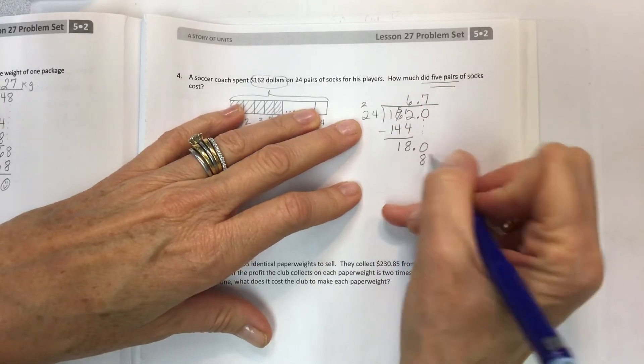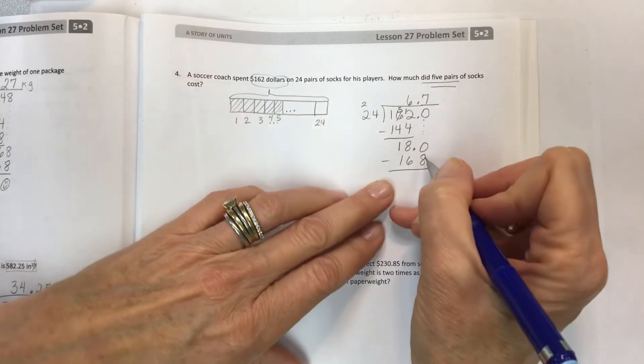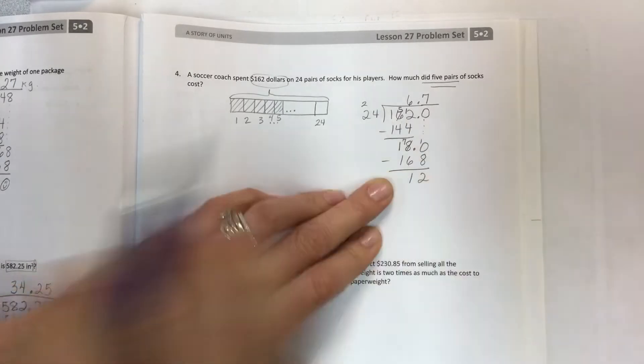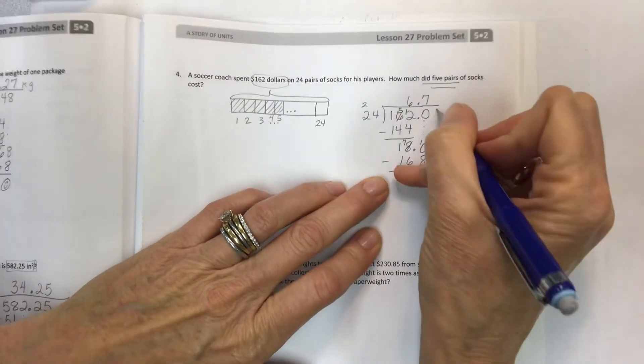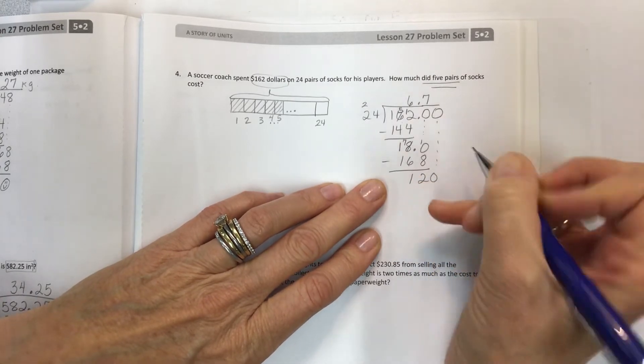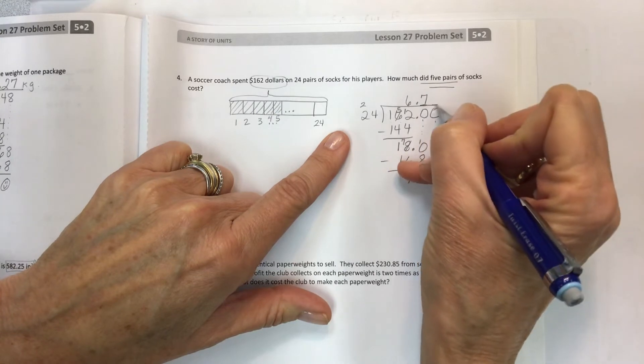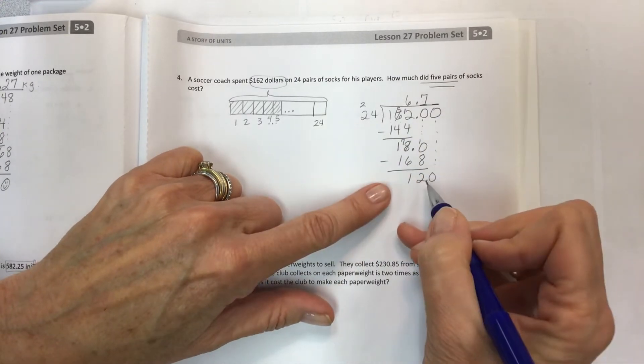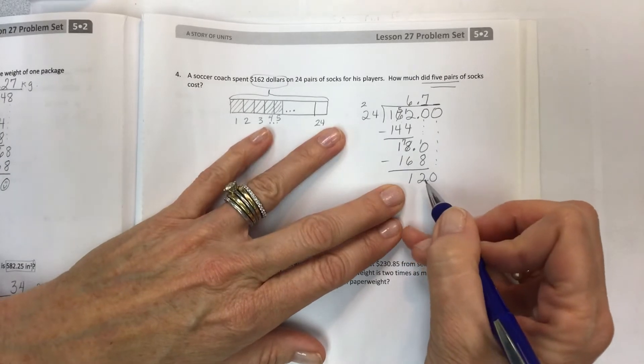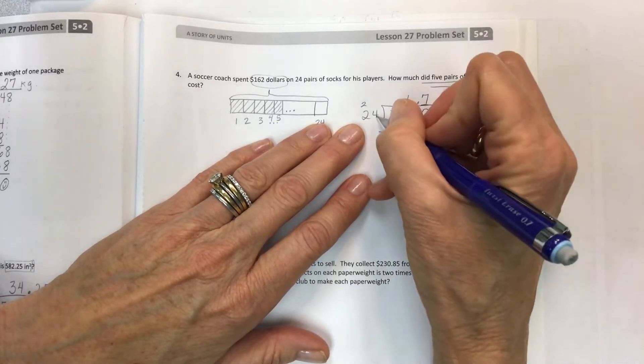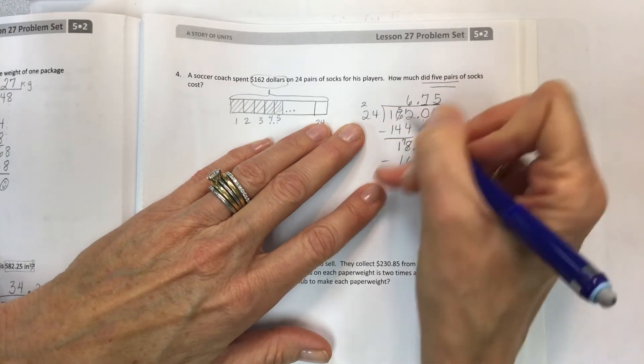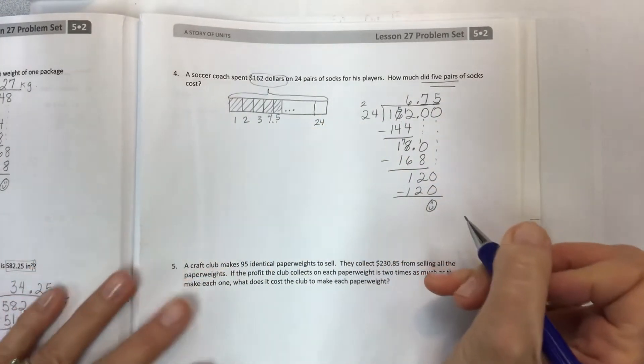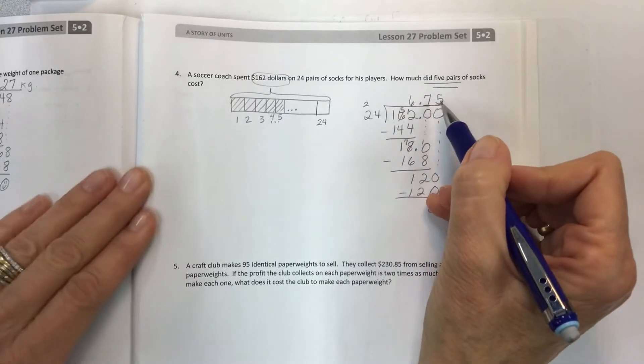Annex that zero, bring it down. 180 tenths can be divided by 24. Seven times four is 28, seven times two is 14, 15, 16. The difference is 12. Annex another zero and bring that down. If you're talking about money, you always want to have two place value positions after the decimal. 120 divided by 24, five times four is 20, five times two is 10 plus two is 12. We have 6.75. That's the cost of one pair.